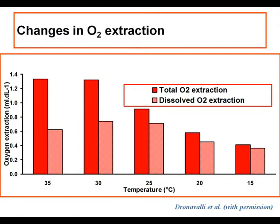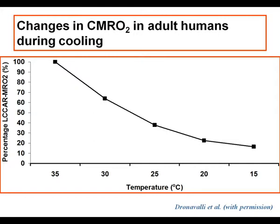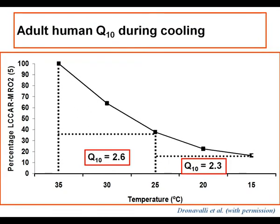If we look at how patients behave, taking their 35 degrees centigrade metabolic rate as 100%, we can see that by 25 degrees centigrade the actual metabolic rate has fallen to about 45%, and at 15 degrees centigrade it's fallen slightly below 20%. This allows us to calculate in humans the adult Q10, which for our data shows a Q10 of 2.6 between 30 and 25 degrees, and a Q10 of 2.3 between 25 and 15 degrees.